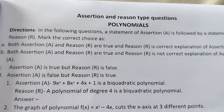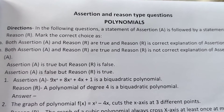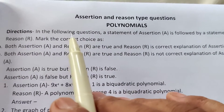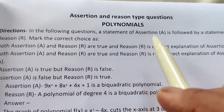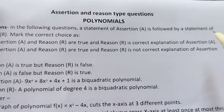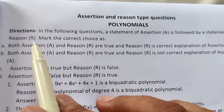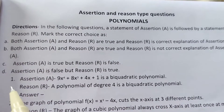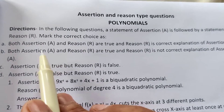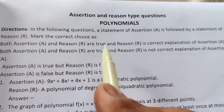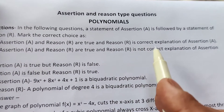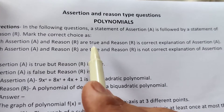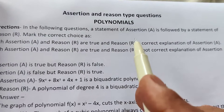Assertion-Reason type questions for Class 10 Chapter Polynomials. In the following questions, a statement of assertion A is followed by the statement of reason R. Mark the correct choice as A, B, C, or D. Option A: both assertion A and reason R are true, and reason R is a correct explanation of assertion A — meaning both things are correct and R is the correct reason.